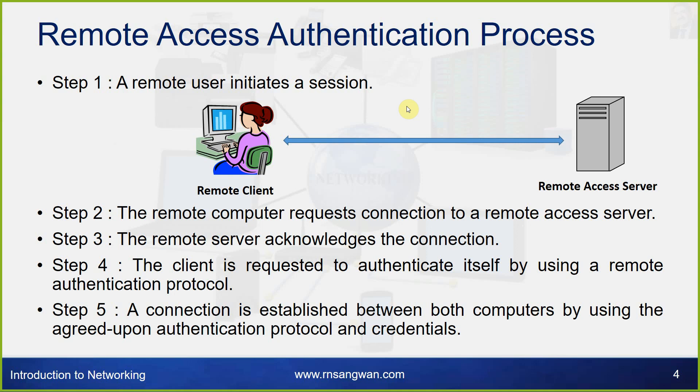Remote access authentication process: Step 1, a remote user initiates a session. Step 2, the remote computer requests connection to a remote access server. Step 3, the remote server acknowledges the connection. Step 4, the client is requested to authenticate itself using a remote authentication protocol. Step 5, a connection is established between both computers using the agreed-upon authentication protocol and credentials.